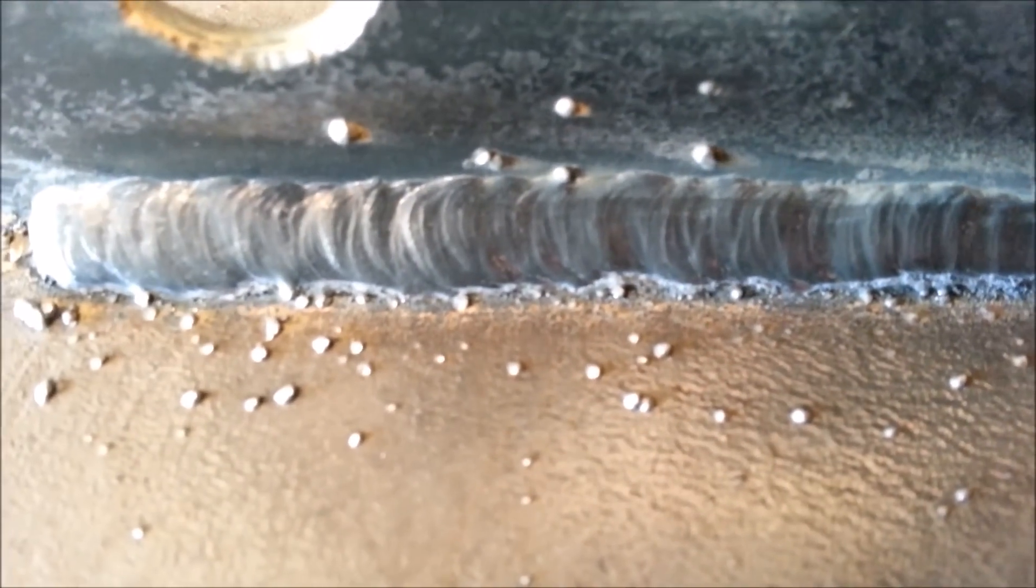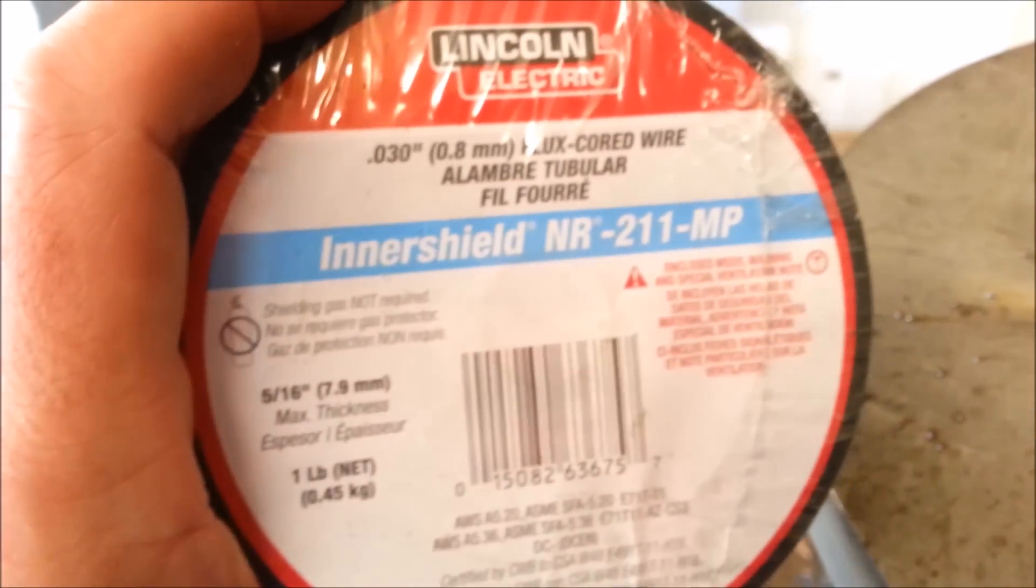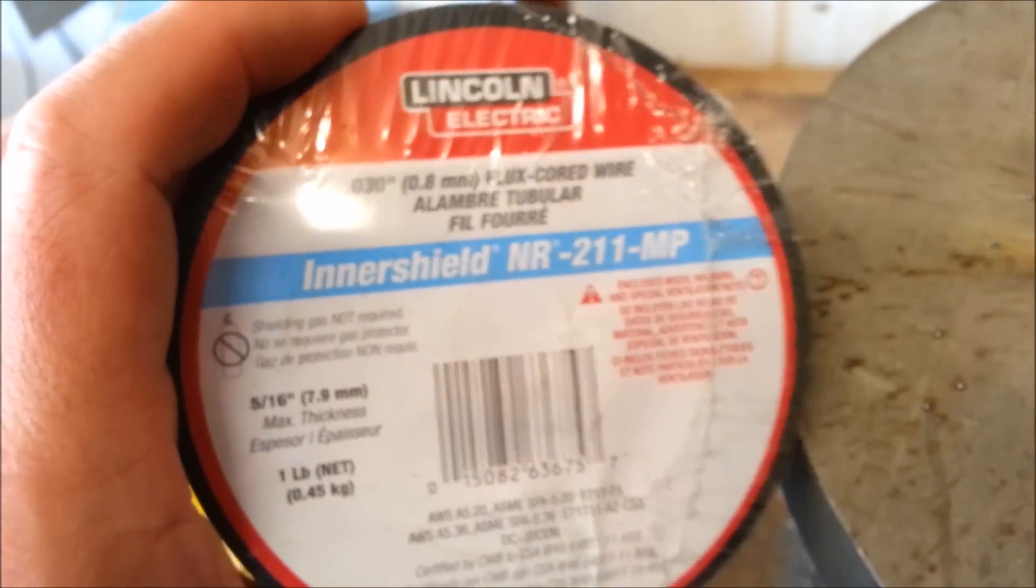So there's no tricks here whatsoever - factory ground clamp, Lincoln 030, it's 11 bucks a spool at Home Depot, and then I just knock off the slag with the wire wheel. I think this is a perfectly good welder for your money. I've had no reliability issues in a year and a half.